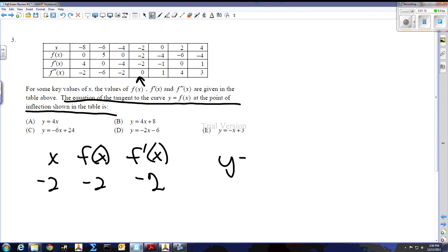So our formula then is y minus y1, which is negative two, equals m, the slope, times x minus negative two.